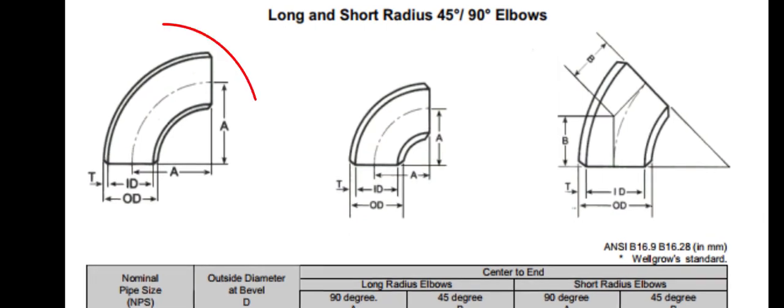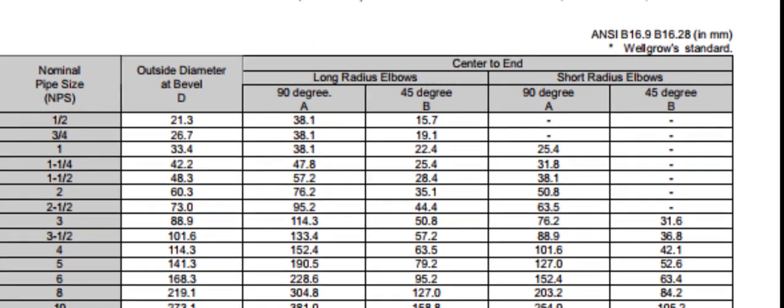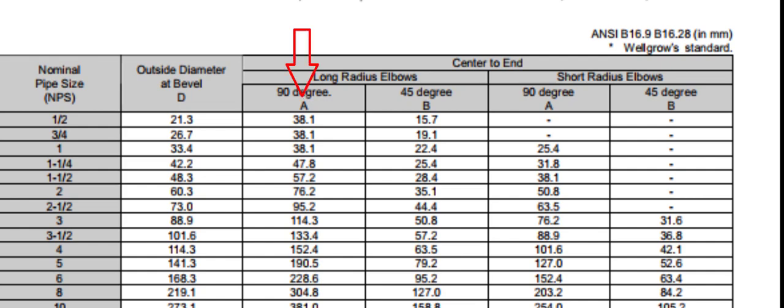Since the size of our pipe is six inches and is long radius, let us check the elbow center or the takeoff length. Check the value of A. According to the chart, the takeoff length is 228.6 millimeters. Let us round it as 229 millimeters.